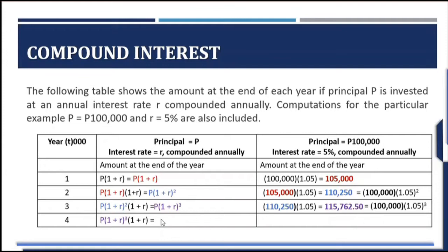On the fourth year, the pattern becomes principal times (1 + r) raised to 4. That is 115,762.50 times 1.05, giving an amount of 121,550.63. This is the same as 100,000 times 1.05 raised to 4, consistent with the interest rate compounded annually.